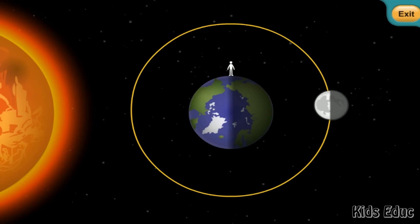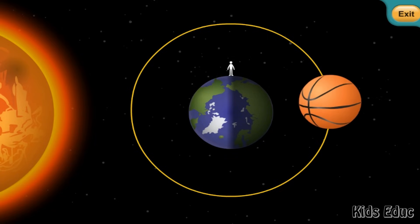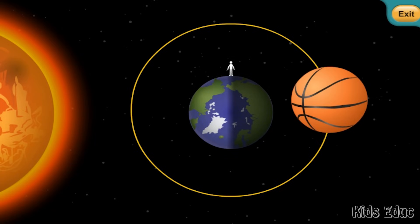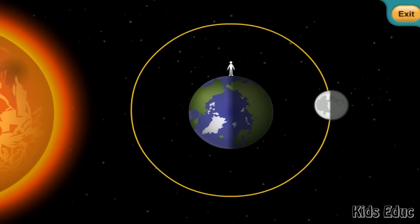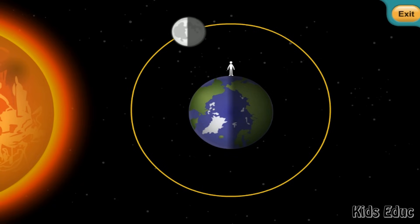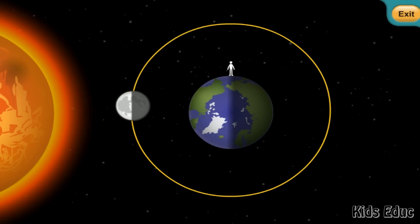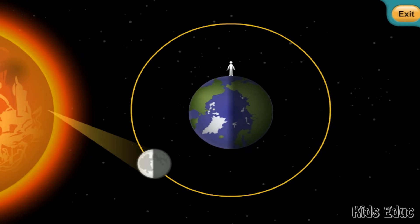The moon always has a spherical shape like a basketball, but it doesn't always look that way to us. We always see exactly half of the moon. Some of the time that half is lit by the sun and we see it. At other times it isn't lit by the sun at all and we can't see it. Most of the time, the part of the moon that we see is partially lit by the sun and partially shadowed.